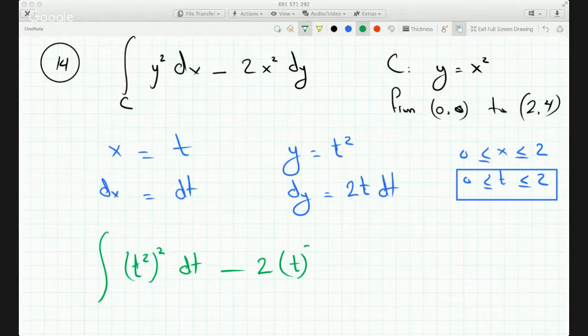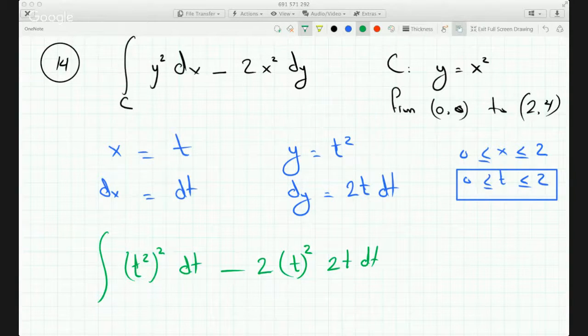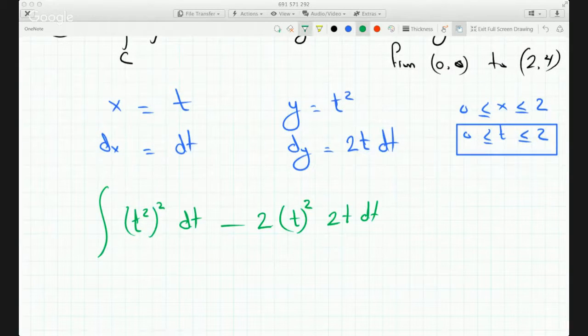Minus 2 times x squared, so I'll replace x with t, t squared, and dy is just 2t dt, and t is going from 0 to 2 in both cases.